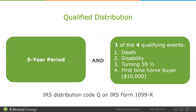For qualified distribution purposes — meaning earnings are tax-free — you must have had a Roth for five years. The moral of the story: if you don't have a Roth, go get one. Start your five-year clock, even start it for your kids. And you must satisfy one of the four qualifying events: death, disability, turning 59 and a half, or for younger folks who've had a Roth for five years, they can use up to $10,000 of the earnings for first-time homebuyer purposes, and those earnings will be tax-free.